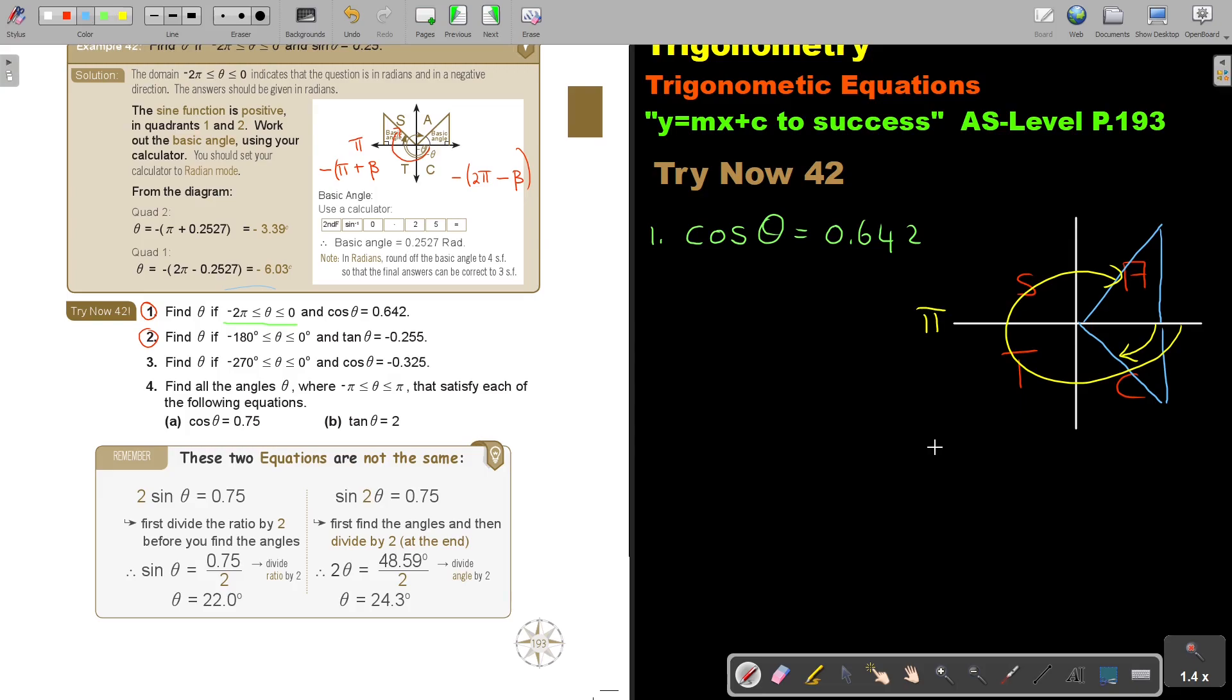But first, I'm going to find my basic angle. And how do I find this? I press second function or shift. I press cos. I press 0.642. And I don't forget that I must make it to three significant figures. Not three - sorry, I'm saying incorrect. I mean correct. So four. Eight. Seven. Three.